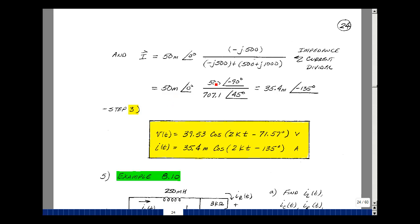So we multiply 50 milli times 500 divided by 707.1. A little bit less than 1, so let's bring this down a little bit to about 35.4 milli. And then the angle will be zero plus minus 90 minus 45, so minus 135.